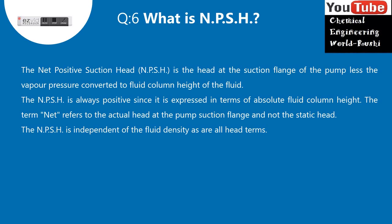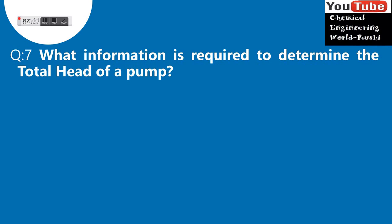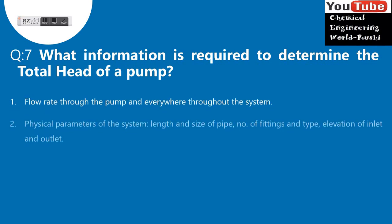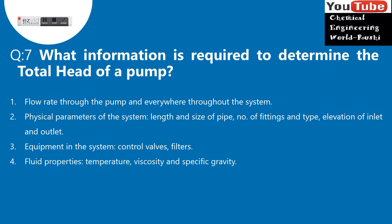Question 7: What information is required to determine the total head of a pump? 1. Flow rate through the pump and everywhere throughout the system. 2. Physical parameters of the system: length and size of pipe, number of fittings and type, elevation of inlet and outlet. 3. Equipment in the system: control valves, filters. 4. Fluid properties: temperature, viscosity, and specific gravity.